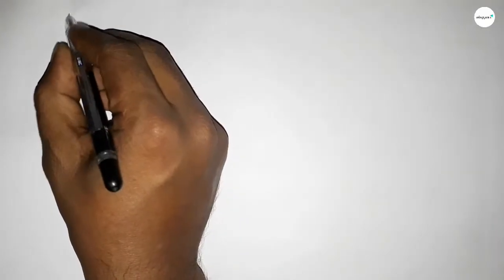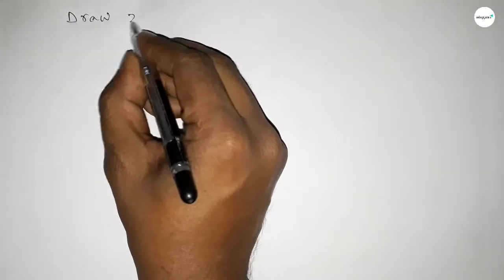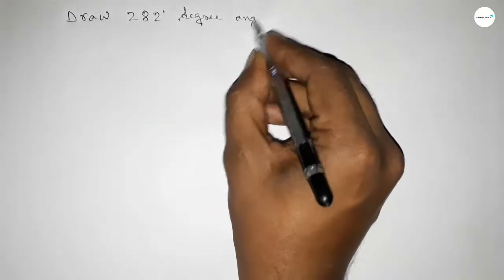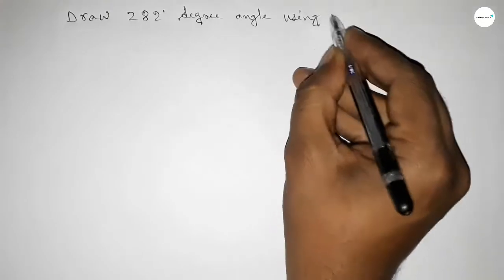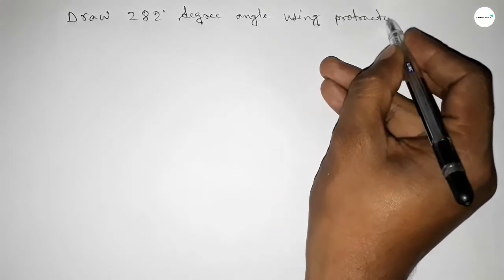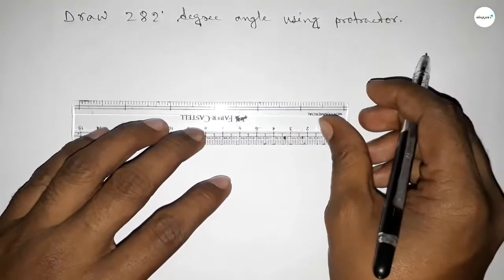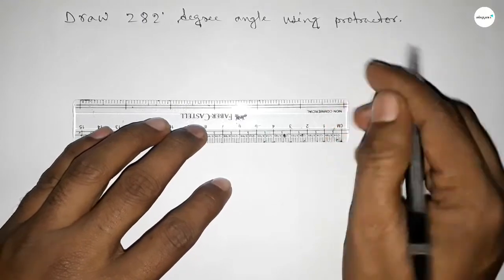Hi everyone, welcome to SSR Classes. Today in this video, we have to draw a 282-degree angle using a protractor. So let's start the video. First of all, we have to draw a straight line of any length.